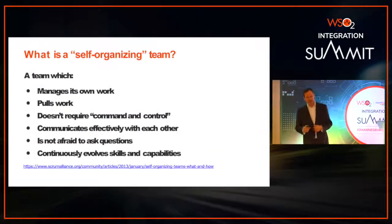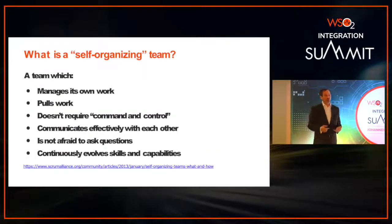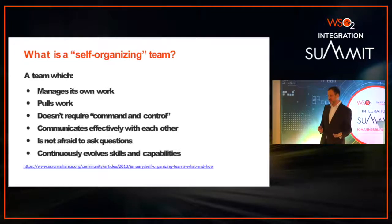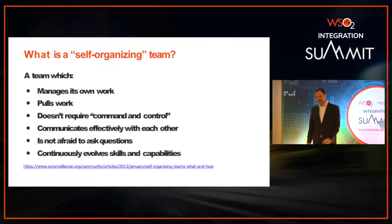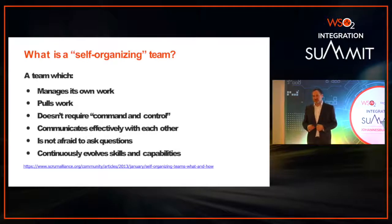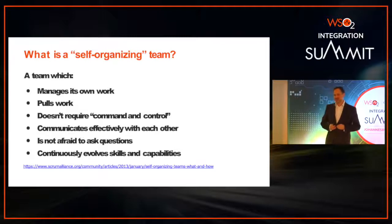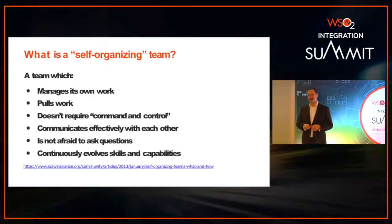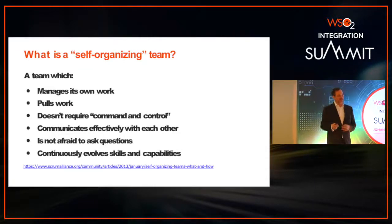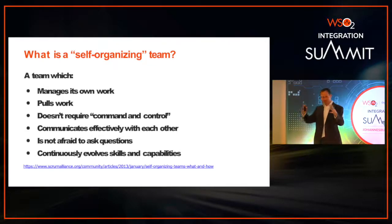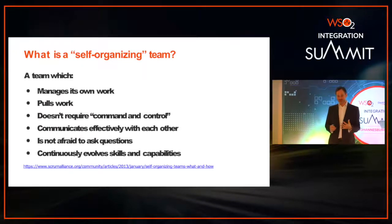A self-organizing team is a team that manages its own work, pulls work, and doesn't require top-down command and control. They communicate effectively. When I say they manage their own work, it doesn't mean they decide one day they were building banking apps but really want to build a dating app — teams need boundaries, structure, and a mission. But once they have that mission, it's up to them to figure out the best way to do it.